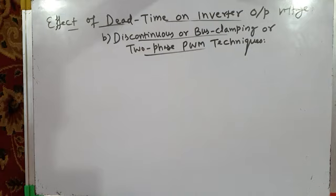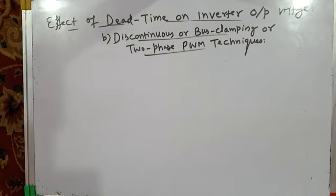These additional harmonics due to average error pole voltage get added to the inverter output actual pole voltage, causing distortion. The instantaneous average values are no longer sinusoidal, so low frequency distortion is introduced in pole voltages and hence in the line voltages and phase-to-neutral voltages.